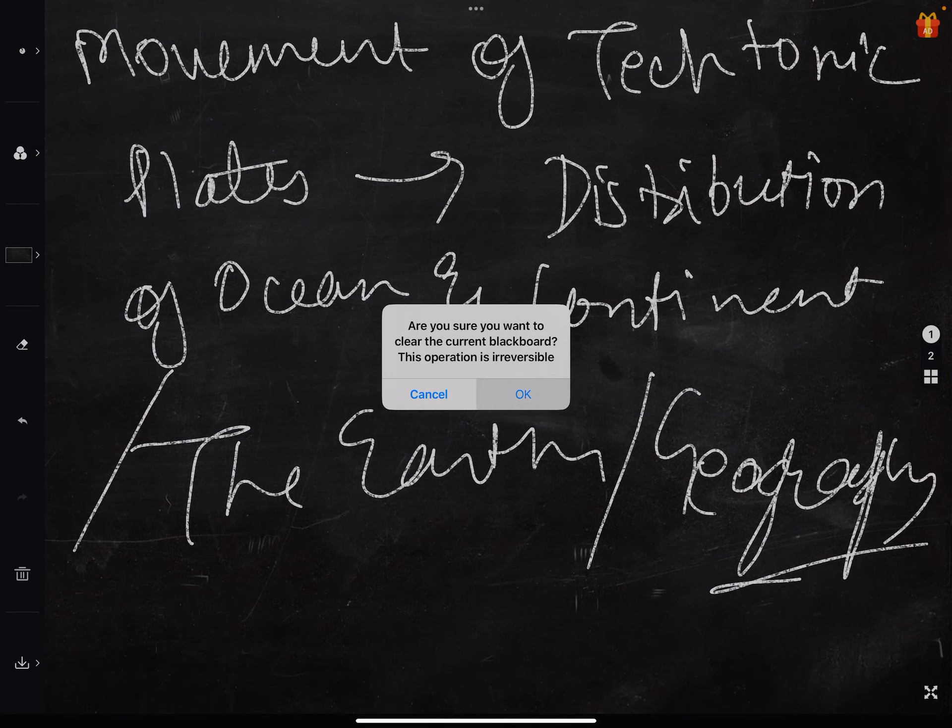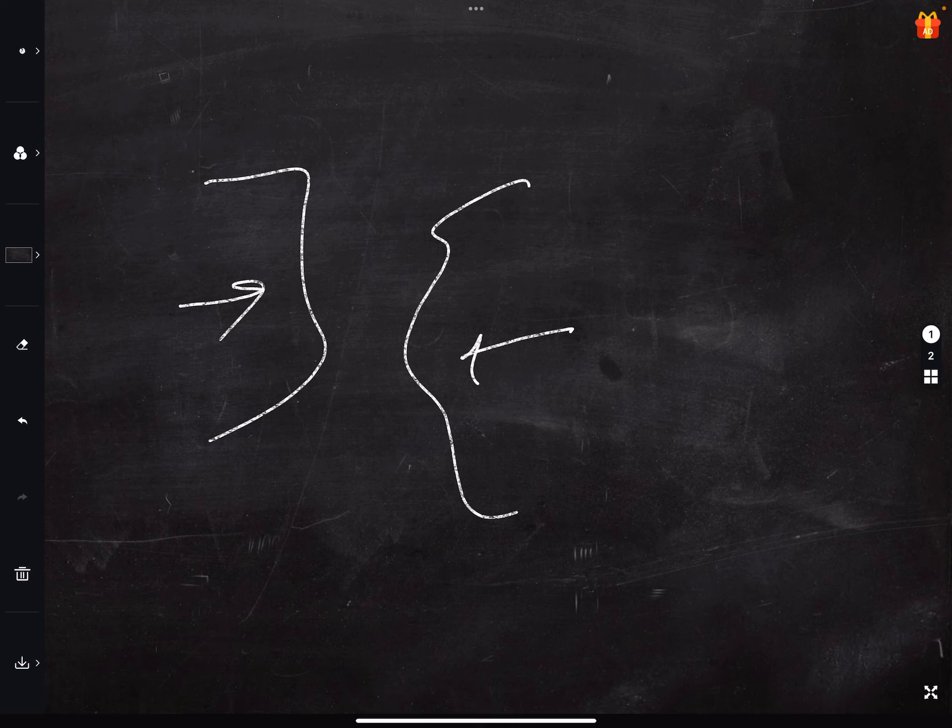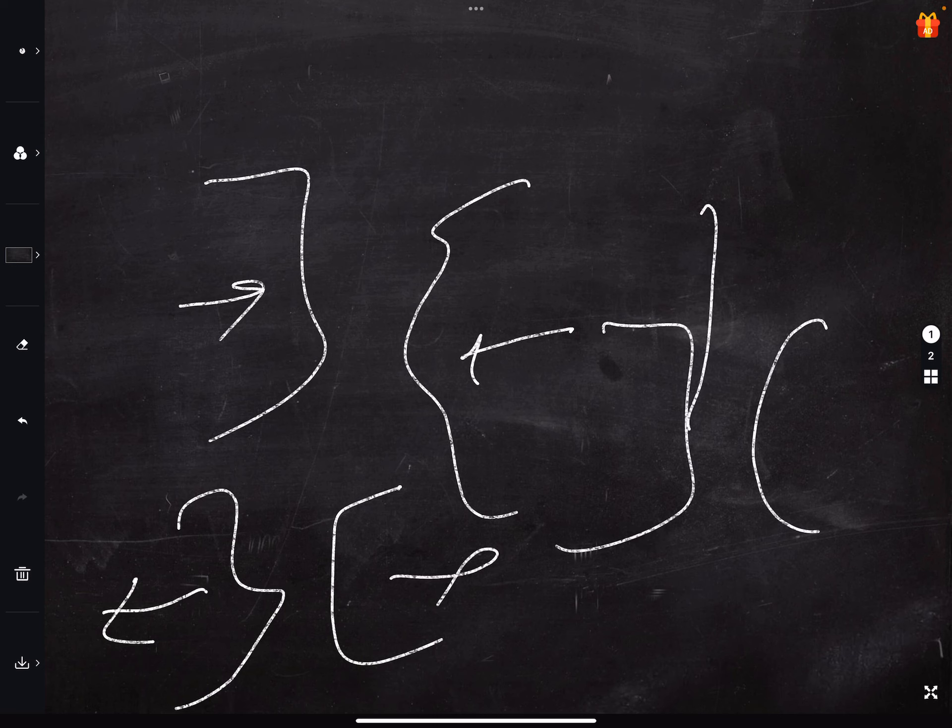What is the reason for the movement of tectonic plates? These tectonic plates, they either come towards each other, that is converge, either they diverge, or there is a transform movement in this manner. But why do these plates move?